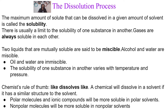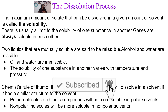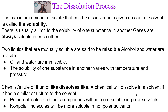Here's a rule of thumb you should pay attention to: likes dissolve likes. A chemical would dissolve in a solvent if it has similar structures to that solvent — similar properties. Polar molecules and ionic compounds would be more soluble in polar solvents. If you try to mix a non-polar molecule with a polar solvent, it's not going to dissolve, because likes dissolve likes. A non-polar molecule is going to be more soluble in a non-polar solvent.